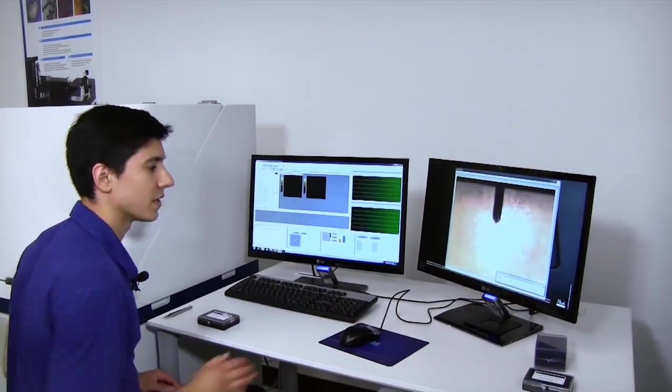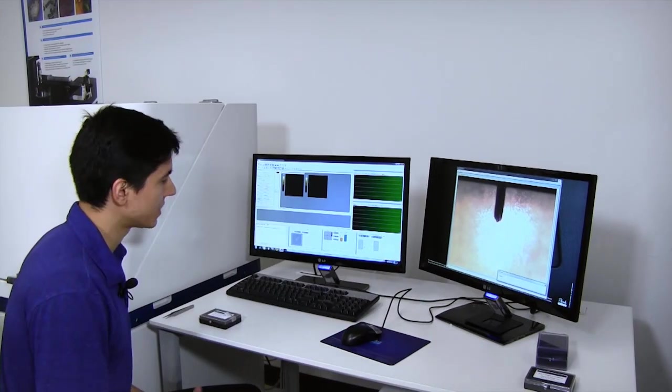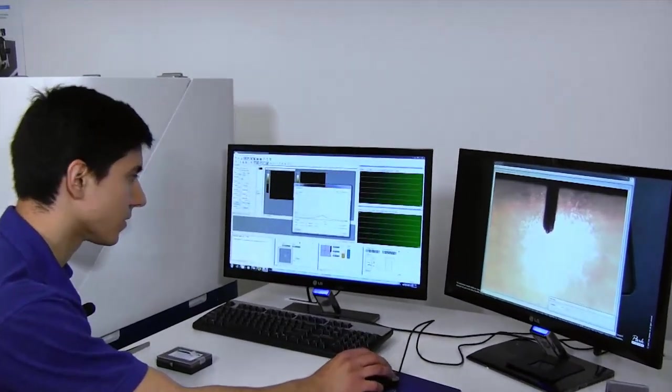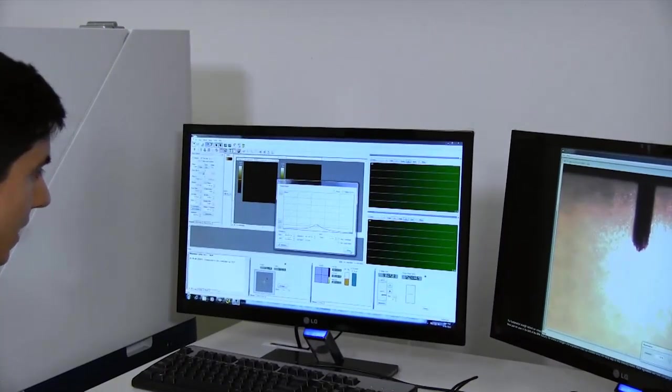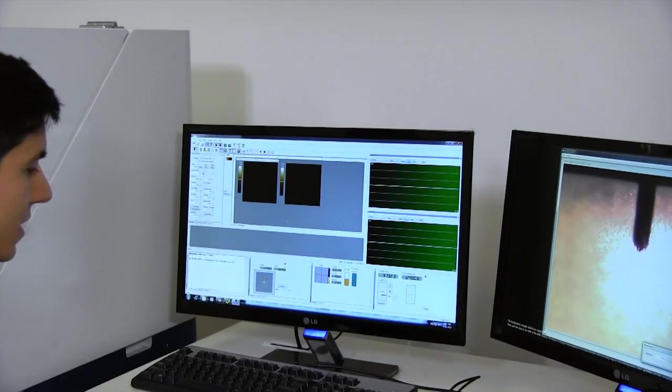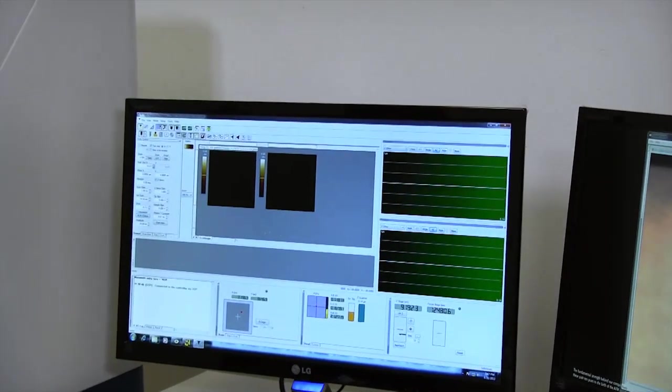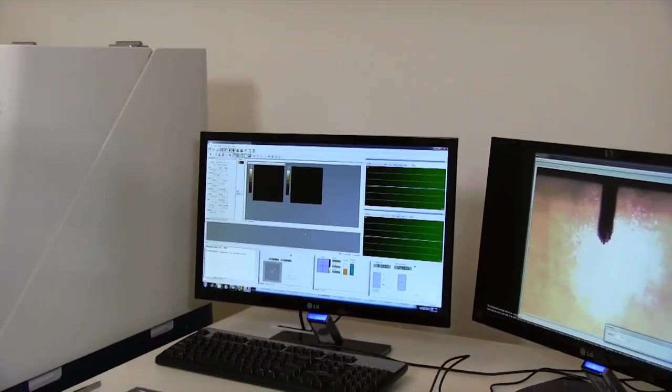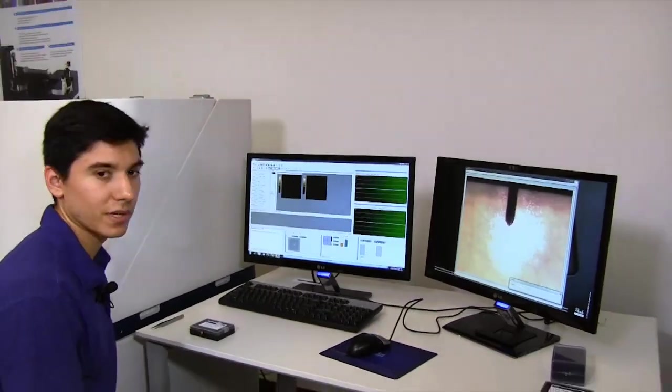First, I want to configure the AFM to take a measurement with the particular probe currently installed. That involves clicking a button and accepting the choices made automatically by the AFM. Now I can click the approach button to bring the sample very close to the surface so it's sensing the sample we're measuring.